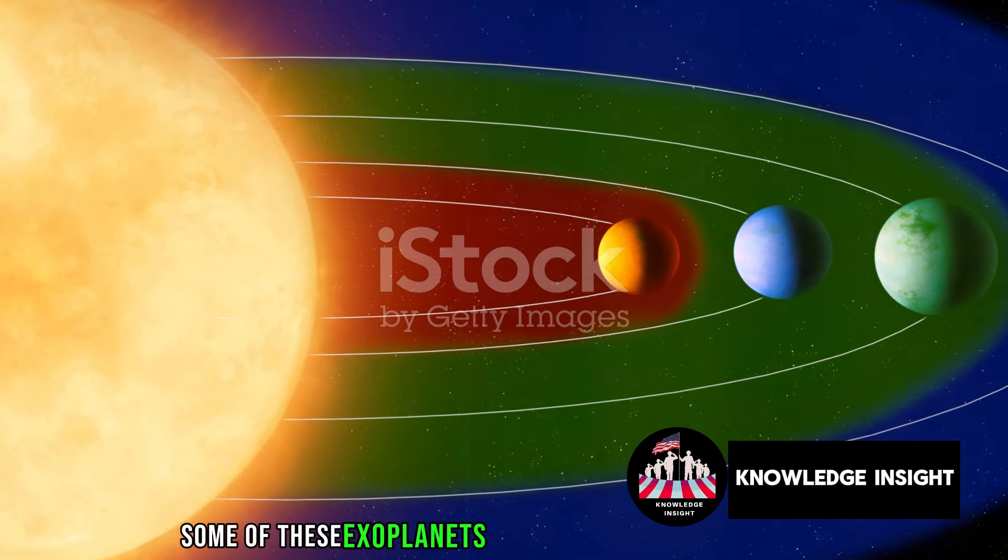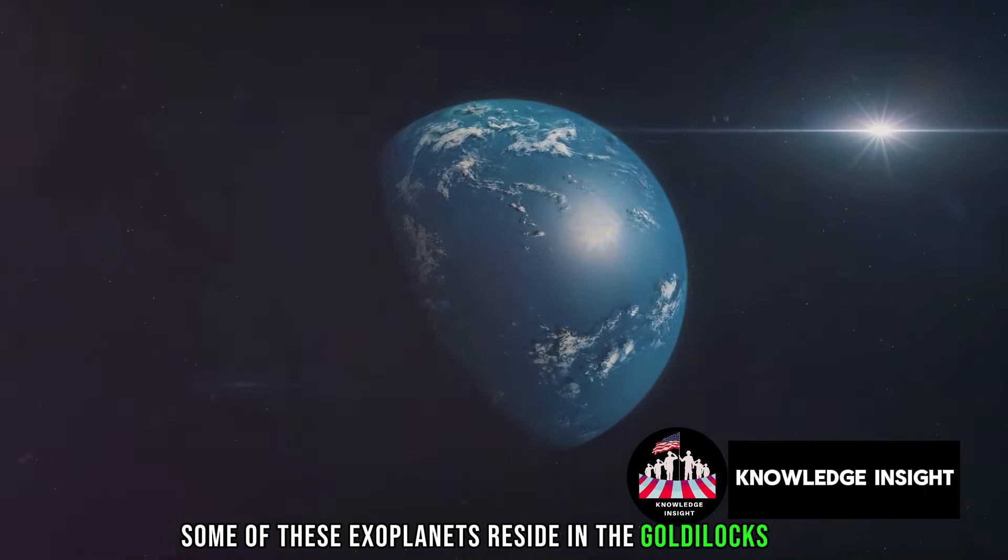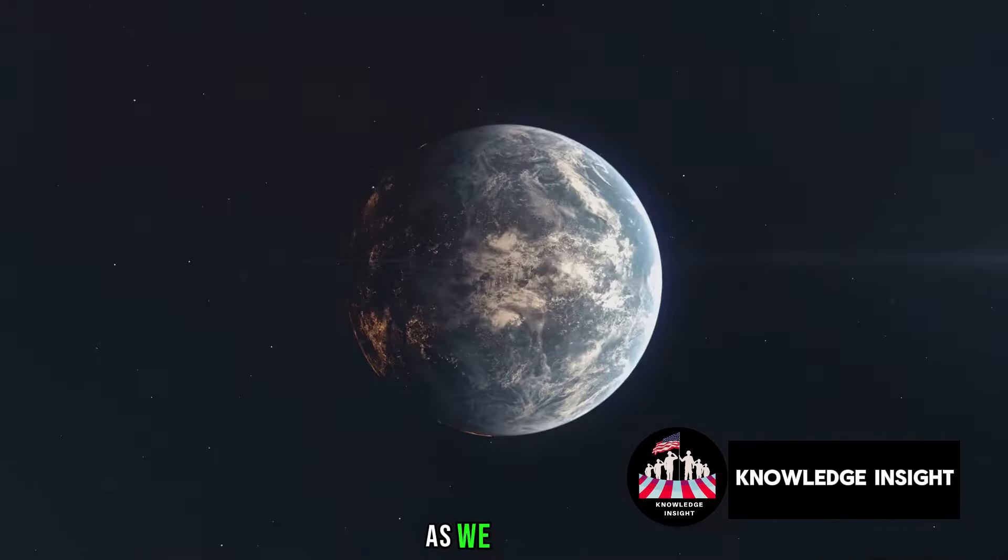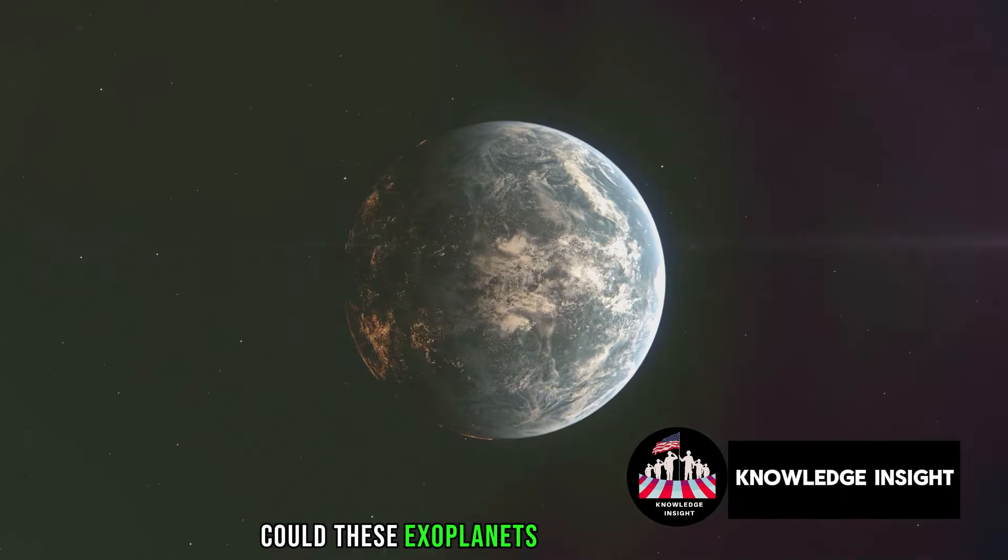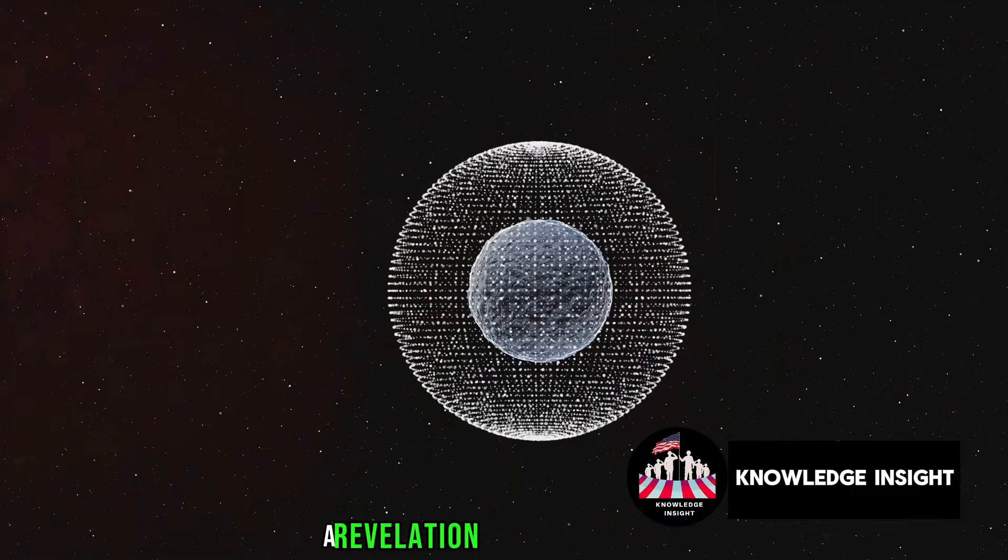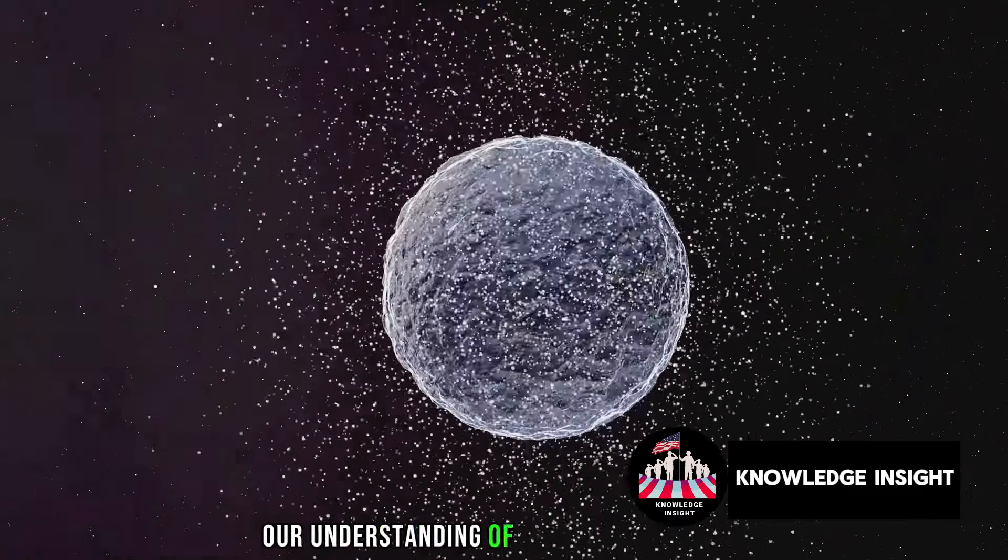Some of these exoplanets reside in the Goldilocks zone, a distance from their star where conditions might just be right for life as we know it. Could these exoplanets harbor life forms? Are we on the brink of a breakthrough, a revelation that will reshape our understanding of life in the universe?